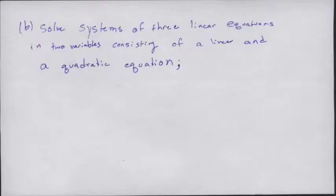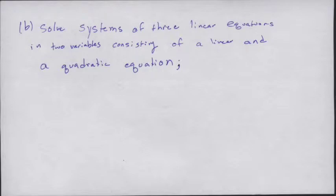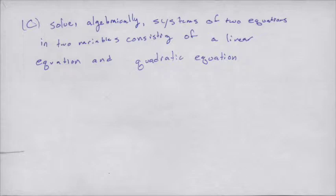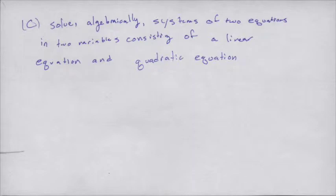And even then, sometimes she won't eat it. This one? B. Solve systems of three linear equations in two variables consisting of a linear and a quadratic equation. Smaller? C. Solve algebraically systems of two equations in two variables consisting of a linear equation and quadratic equation. These all sound kind of the same and they kind of are the same. All you really need to know is how to use a calculator and you can solve basically all these.